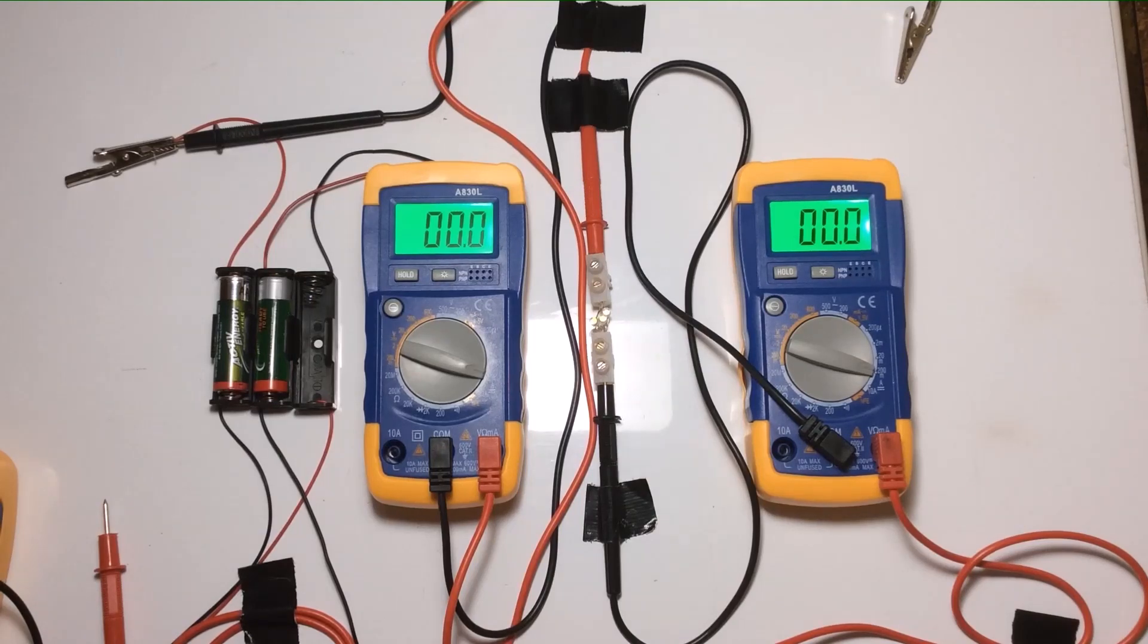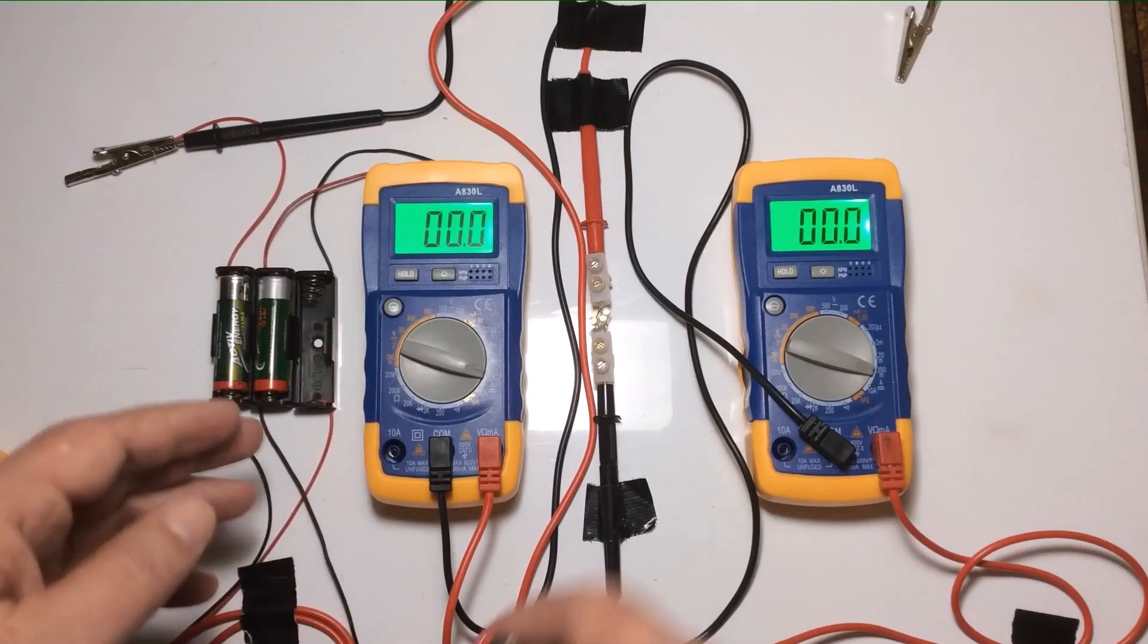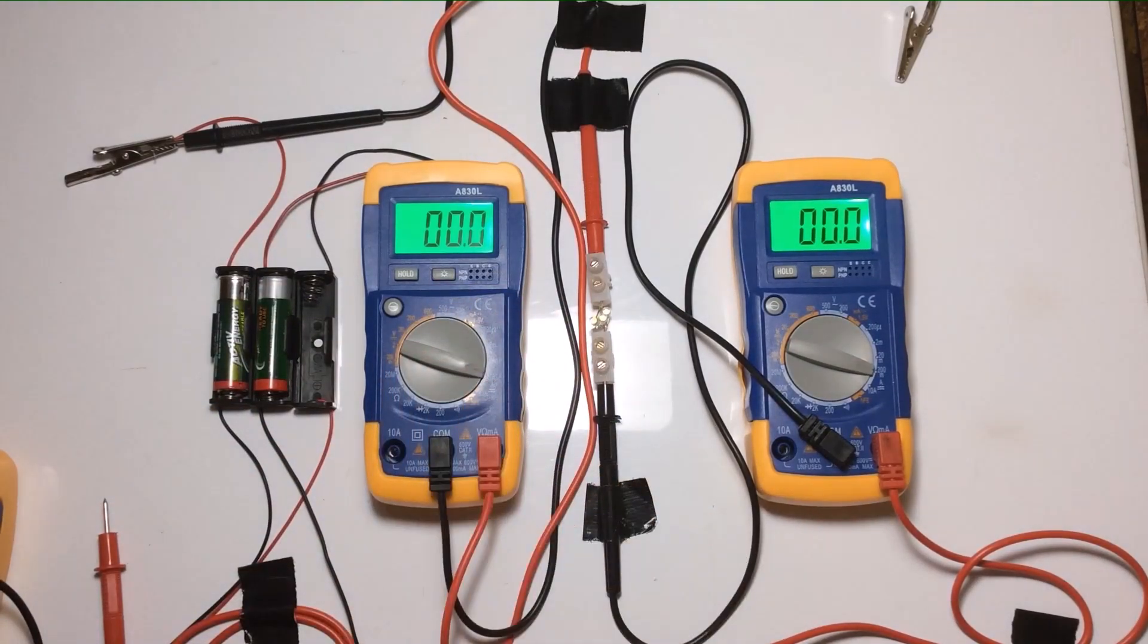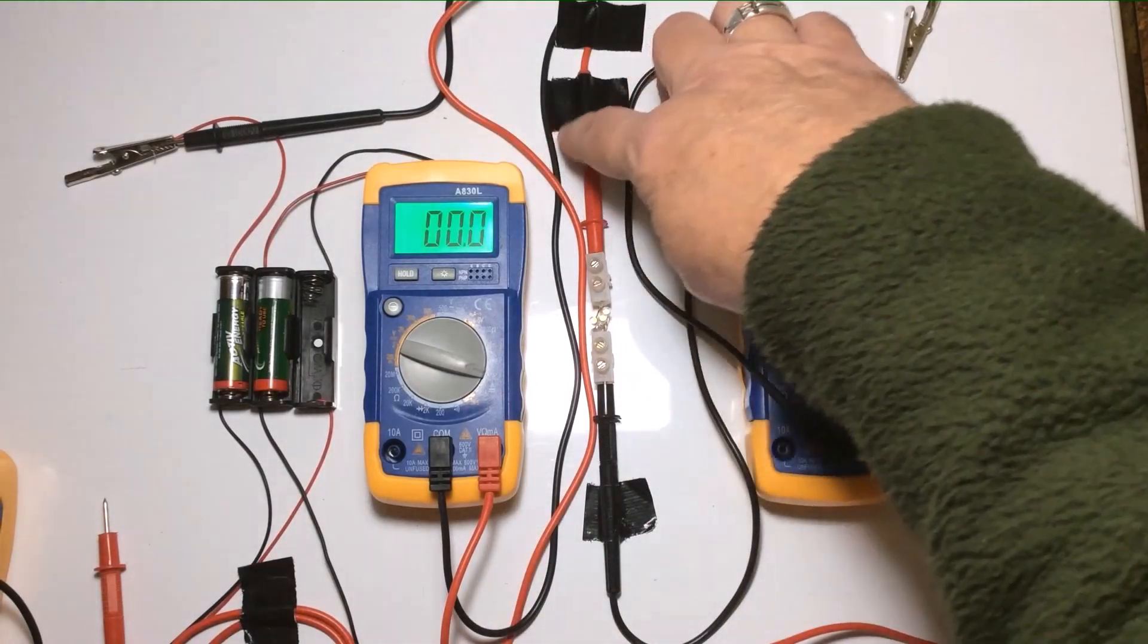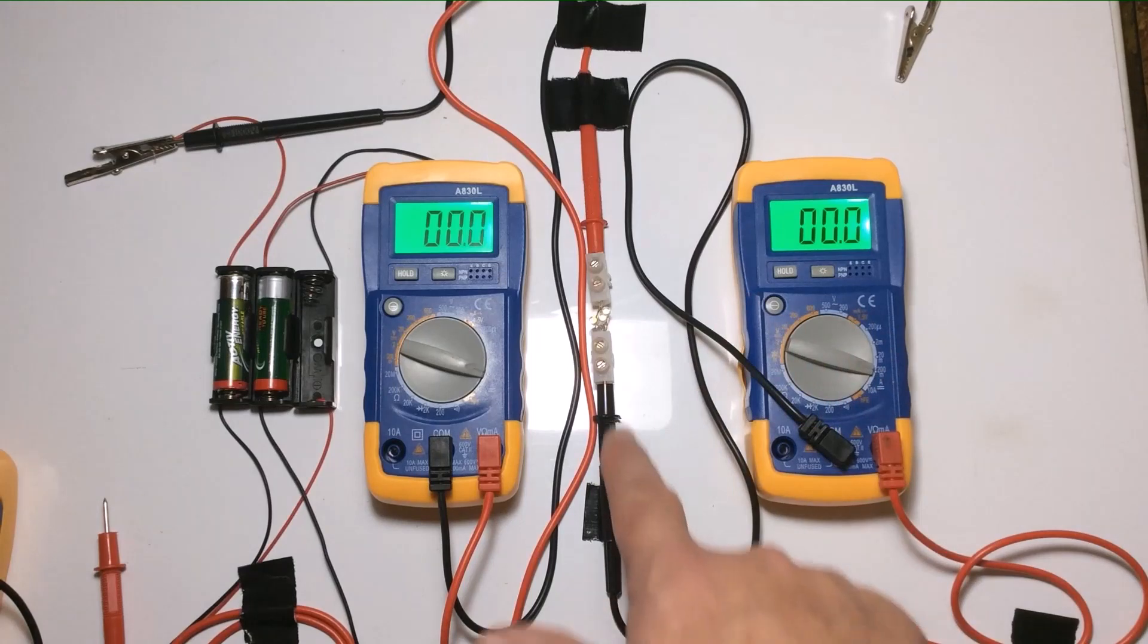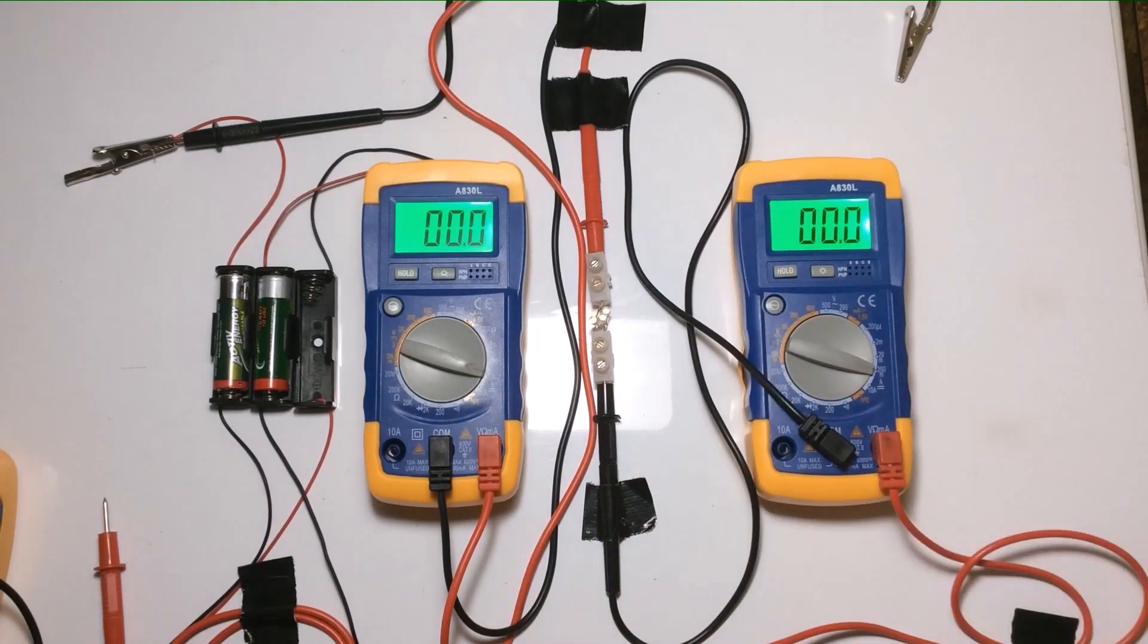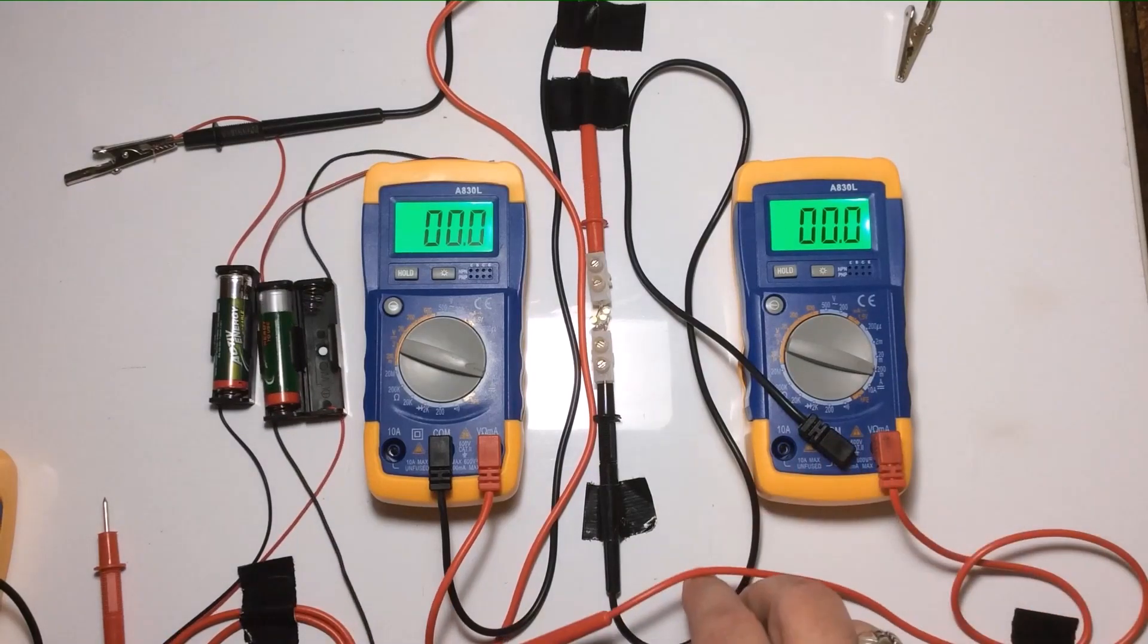All right, so we've got our three batteries in series, 3.6 volts. That runs into this meter set at 200 milliamp gauge. That runs into the load. Out of the load into this meter set at the same 200 milliamp gauge.